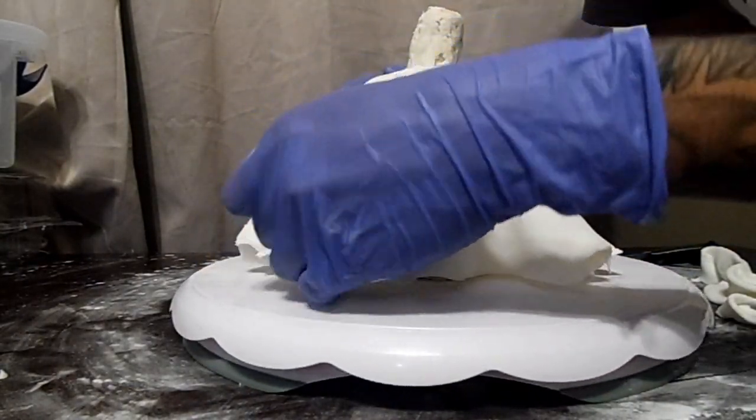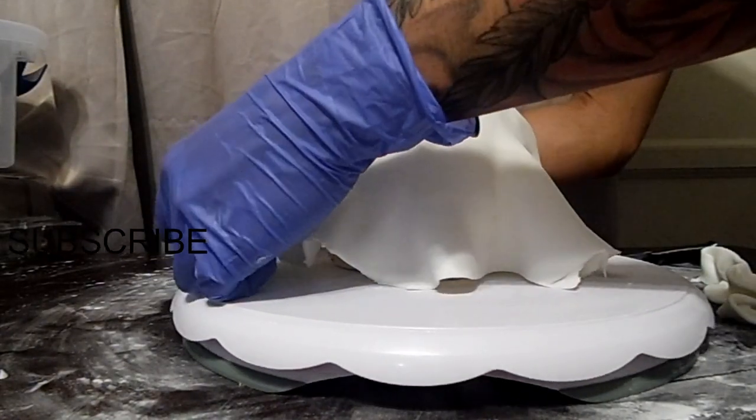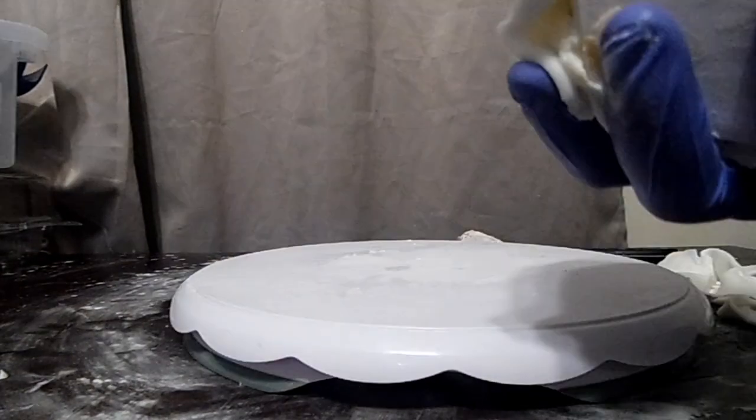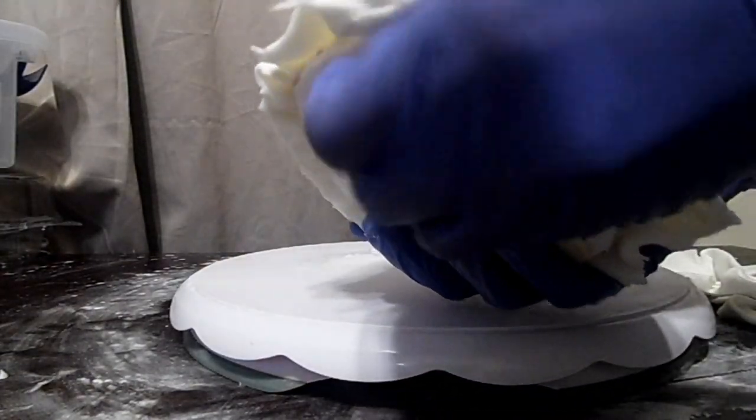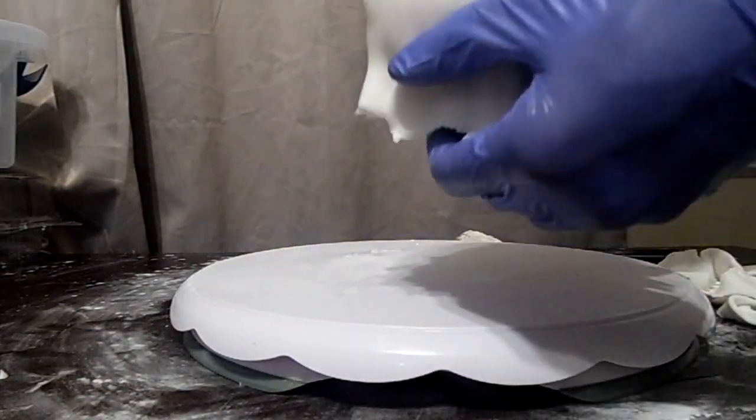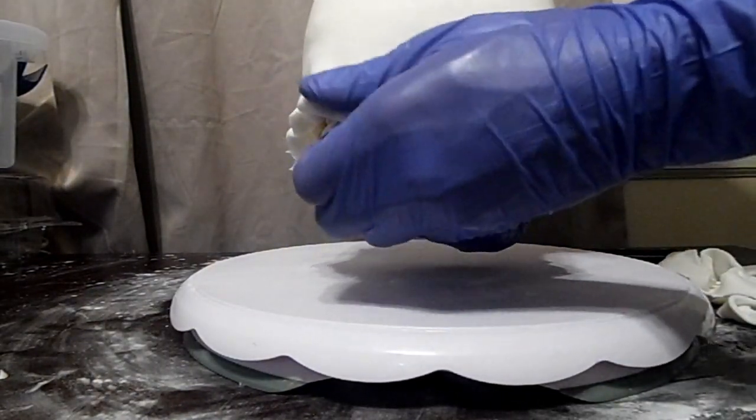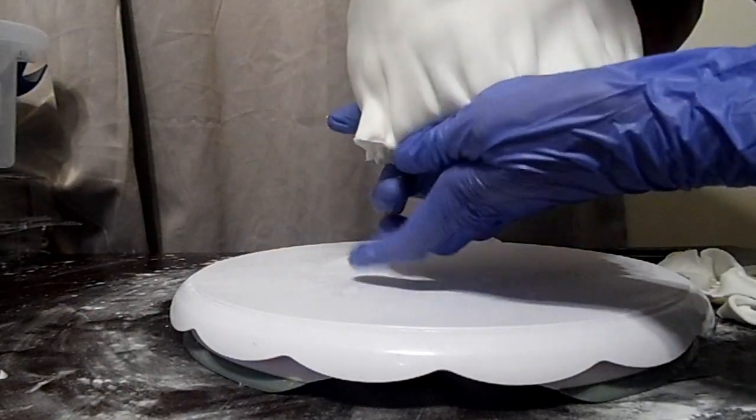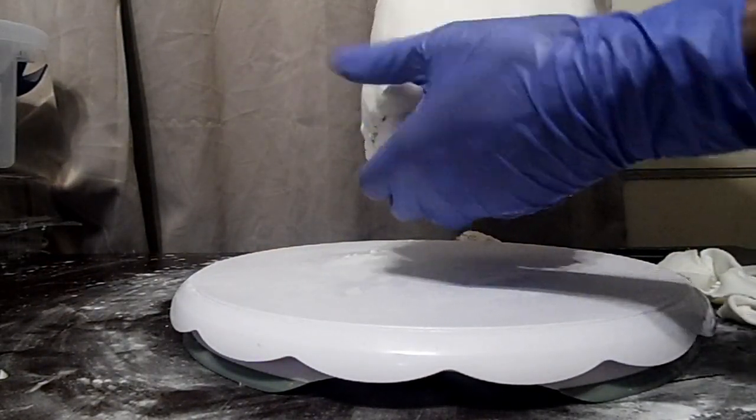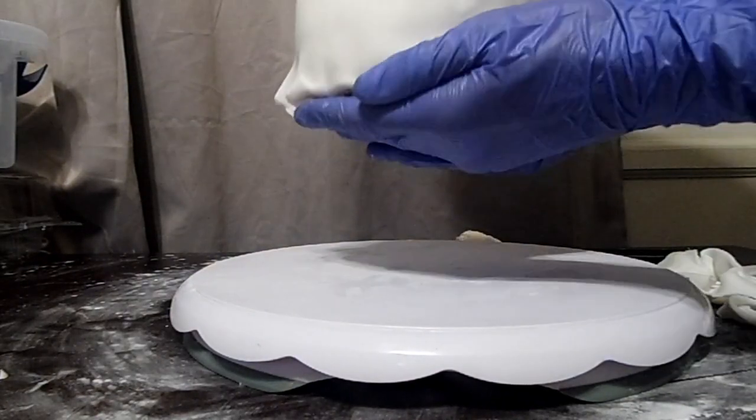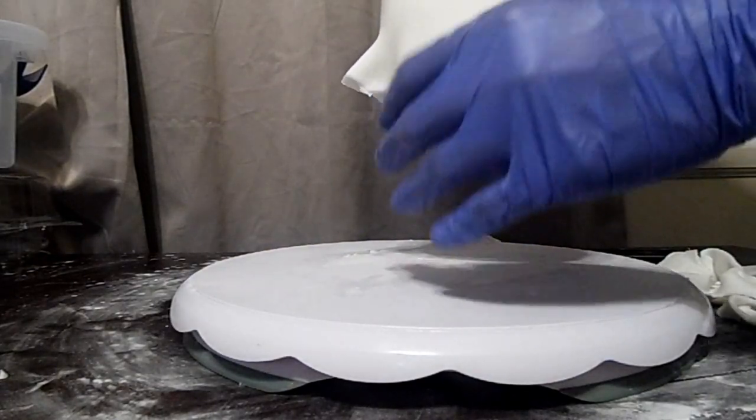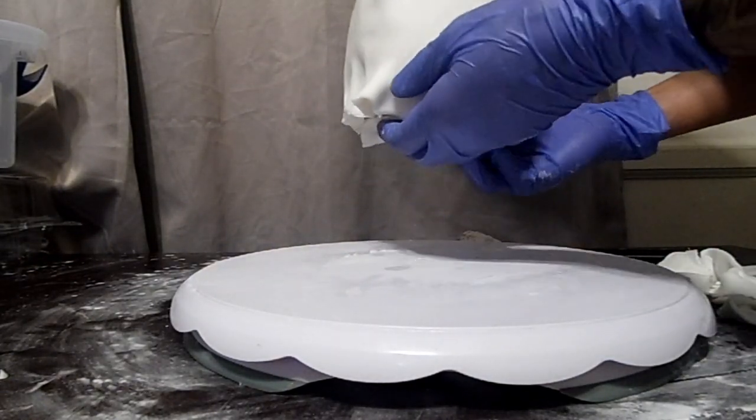And I'm just smoothing it as I go. So just like you did with the box, you're going to do the same thing with this bottle. Lift it up, you're going to push that extra fondant underneath. So what I'm doing is just pushing it underneath and smoothing it under. That right there is the cake board so I'm just pressing it onto the cake board.